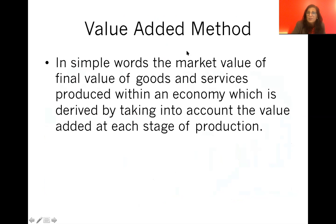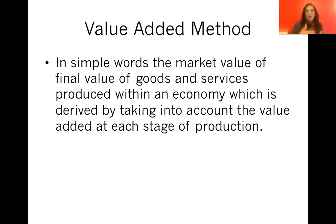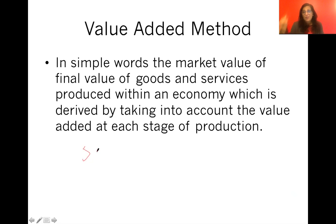The third method is the value-added or output method. The simplest way to remember it is as the market value of final goods and services. If you want to account for value at each stage of production, you track the value added: for example, if in stage one something cost ten dollars and in stage two you sold it for fifteen dollars, the value added is five dollars. You sum up the value added at each stage of production.